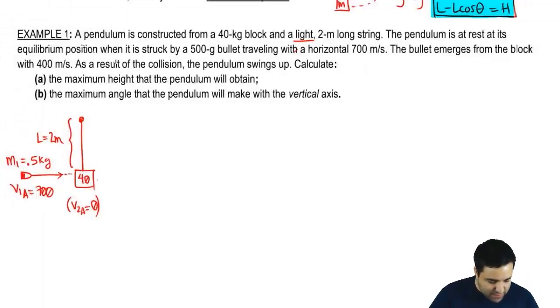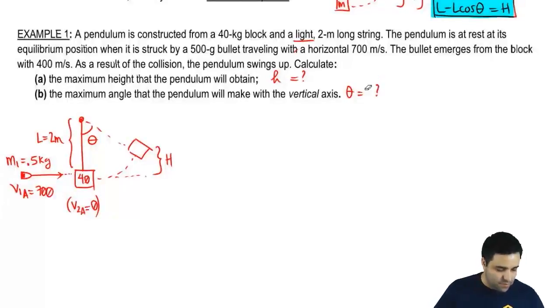It hits the pendulum and the pendulum is going to swing up this way. And we want to know what is the maximum height that the pendulum will obtain. This height is always relative to the lowest point. And we want to know what is this theta right here. So we want to know H. And we want to know theta.